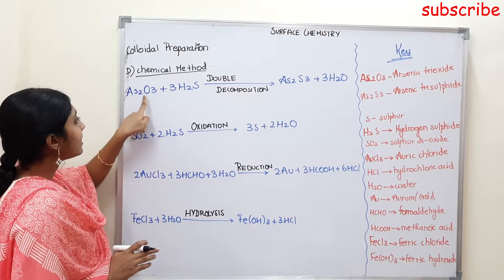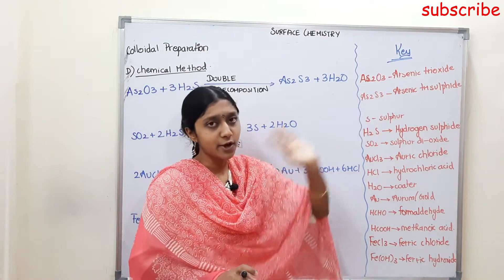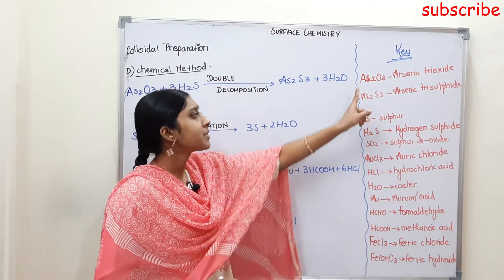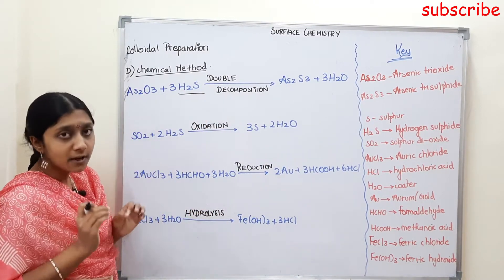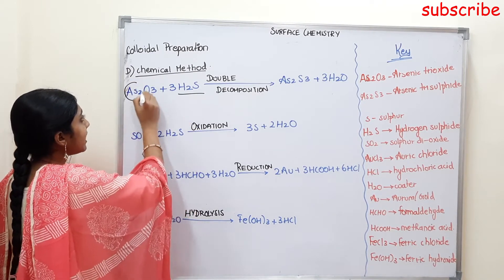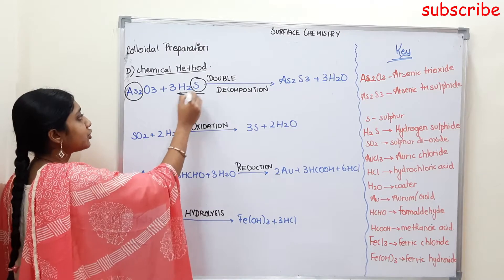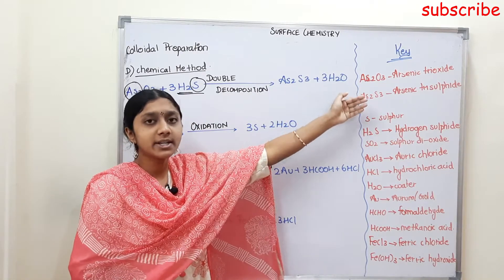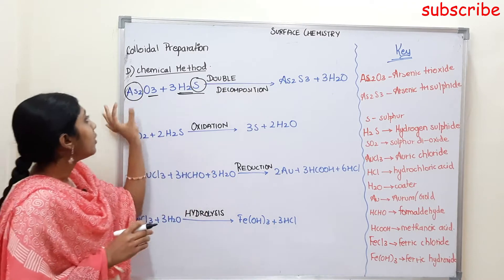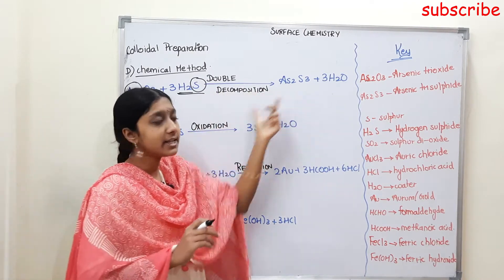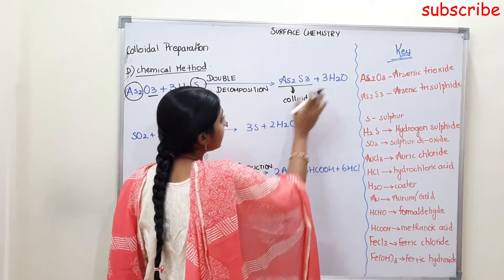The first reaction is As2O3 reacting with 3 molecules of H2S. As2O3 is Arsenic Trioxide, reacting with Hydrogen Sulfide. The product is As2S3, which is Arsenic Trisulfide, and H2O. This process is Double Decomposition. As2S3 is our colloidal solution in water.